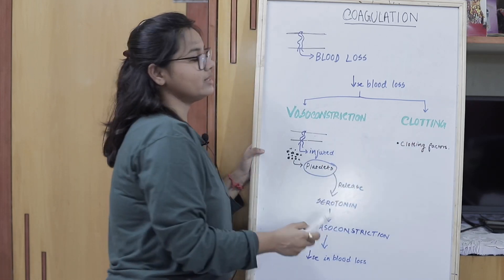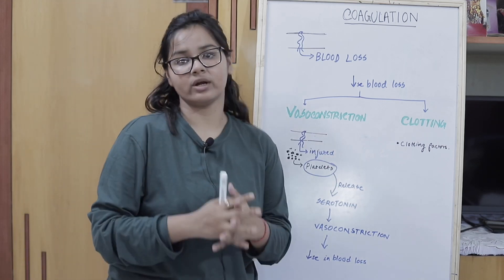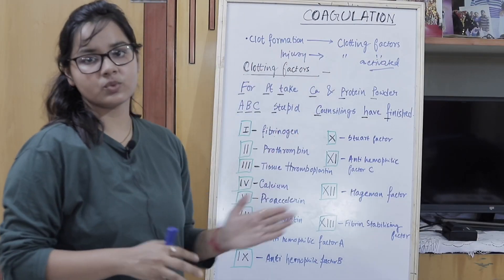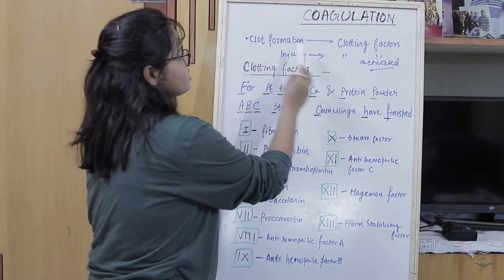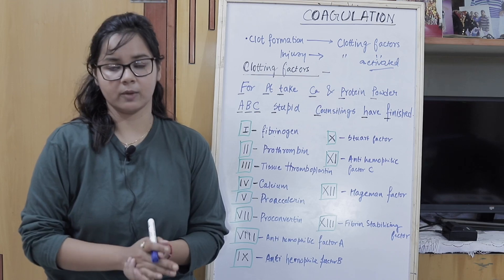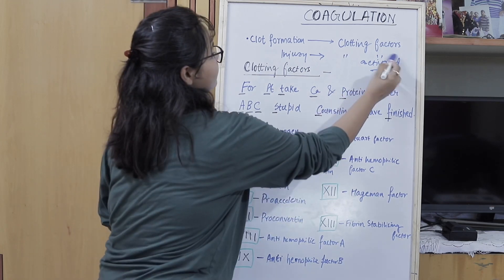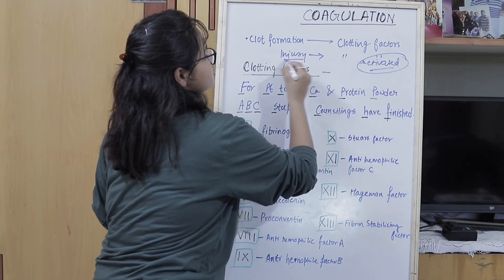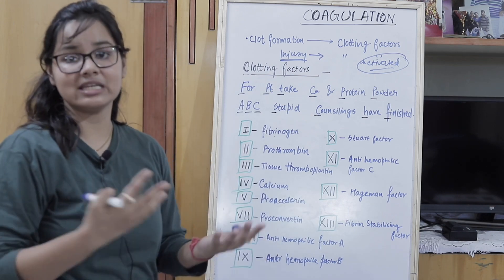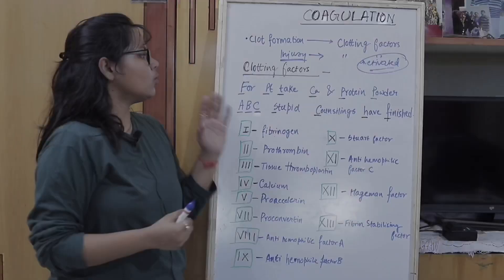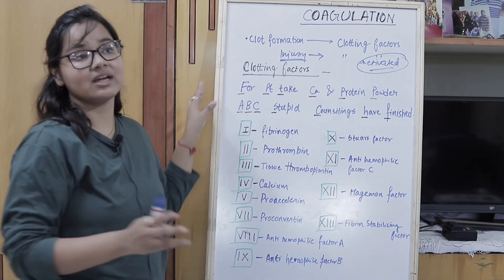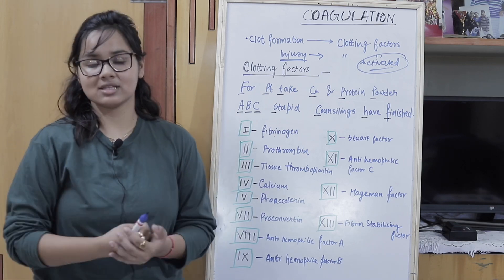Coagulation, or clot formation, is our discussion topic today. This clot formation requires clotting factors. These clotting factors are always present in our body, but they are in an inactivated form. The clotting factors are activated only when there is injury — they change from inactivated to activated clotting factors when injury occurs.